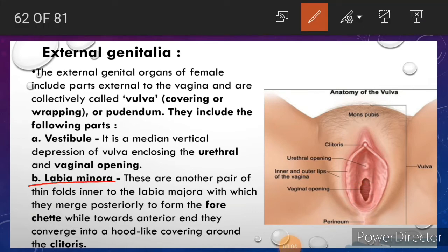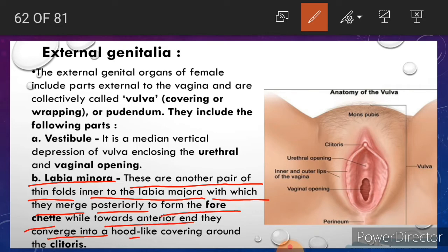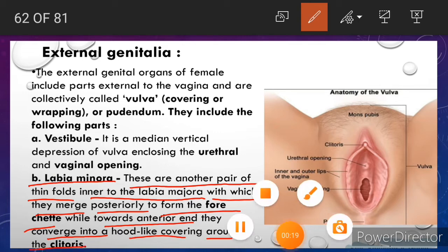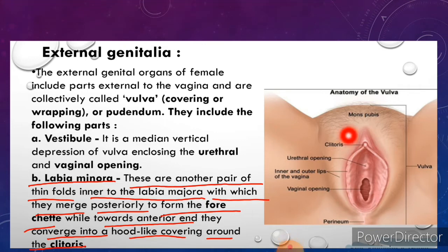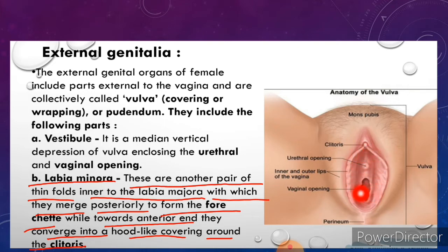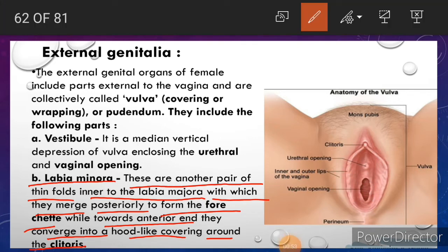Next is labia minora. These are another pair of thin folds inner to the labia majora. Posteriorly they merge to form the fourchette, which is a thin fold of skin at the back of the vulva.